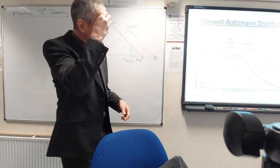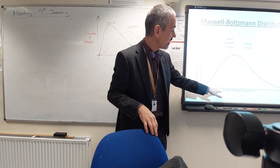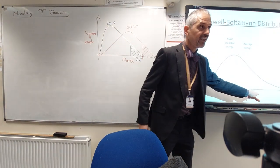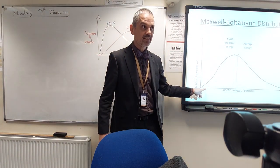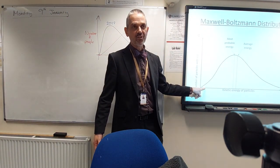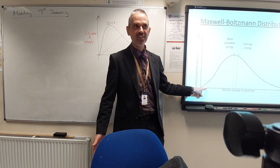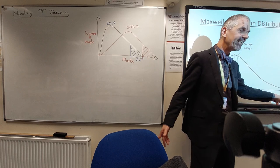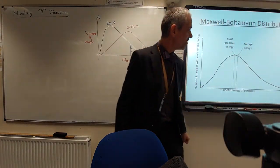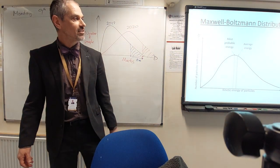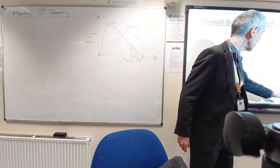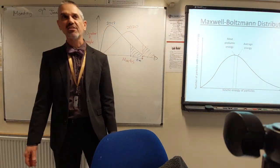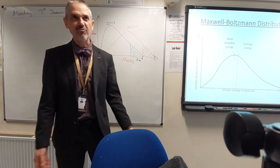Just to clarify the axes: along the bottom we're looking at the energy of particles. Particles down this end — like students not doing very well in tests — don't have very much energy. Up here we've got particles with loads of energy, the really high-energy kind. In the middle we get a broad bunch of particles that have roughly average energy.